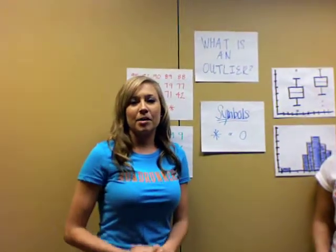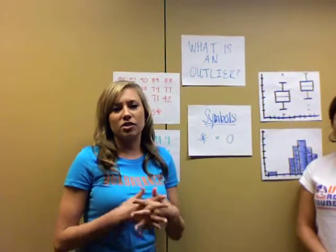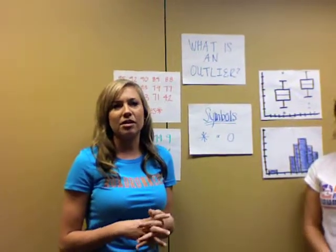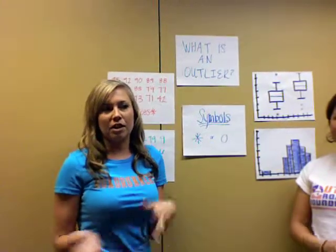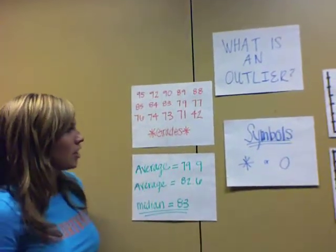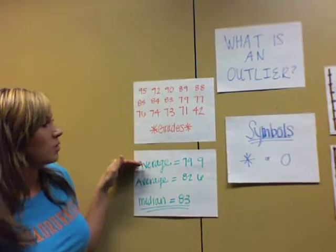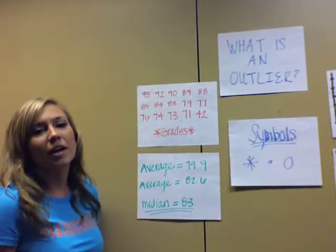One common example is when teachers calculate the mean of student grades. Say there are 15 students with grades ranging between 70 and 90. With these grades shown here, when you include the lowest value of 42, your average comes out to 79.9.